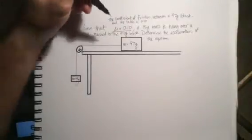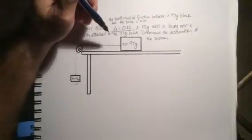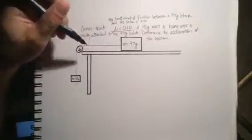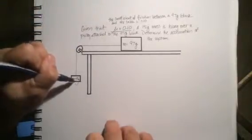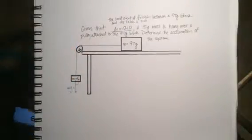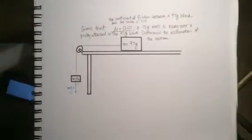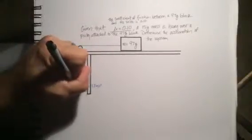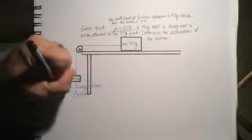First, we need to figure out what's causing this thing to accelerate. The applied force is mg, which is equal to 0.015 kilograms times 9.8 meters per second squared, which equals 0.147 newtons. That's our applied force.